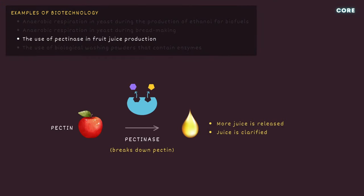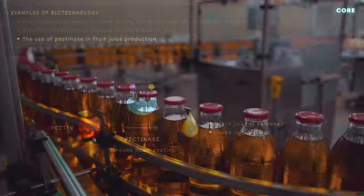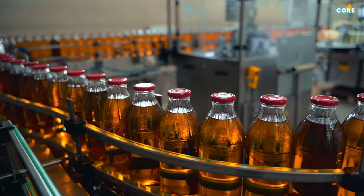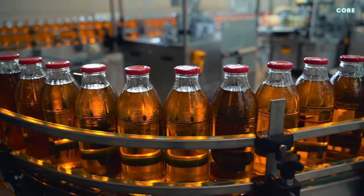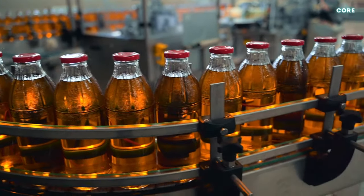Pectin is a soluble fibre found in plant cell walls. It prevents fruits like apples from releasing their juice when squeezed, and makes the juice cloudy. In commercial fruit juice production, enzymes called pectinases are added to break down the pectin. This helps to separate the juice from the fruit, and makes the juice more transparent.